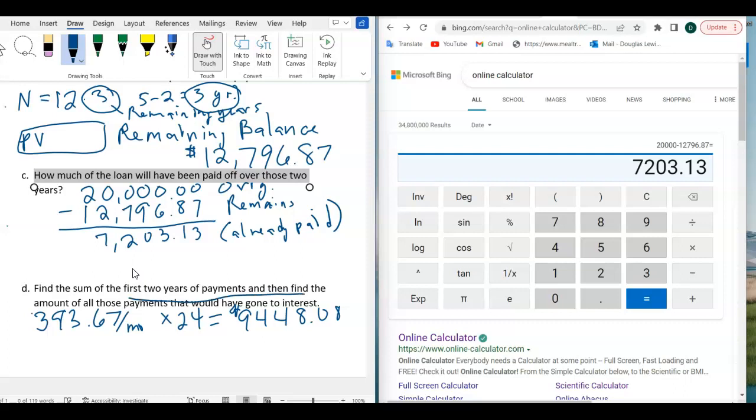That is $9,448.08 is what you've paid. That's the sum of all those monthly payments. But only this amount went towards the principal or the balance. So you only paid, this is what you already paid off, I should say. That's what's been paid off.